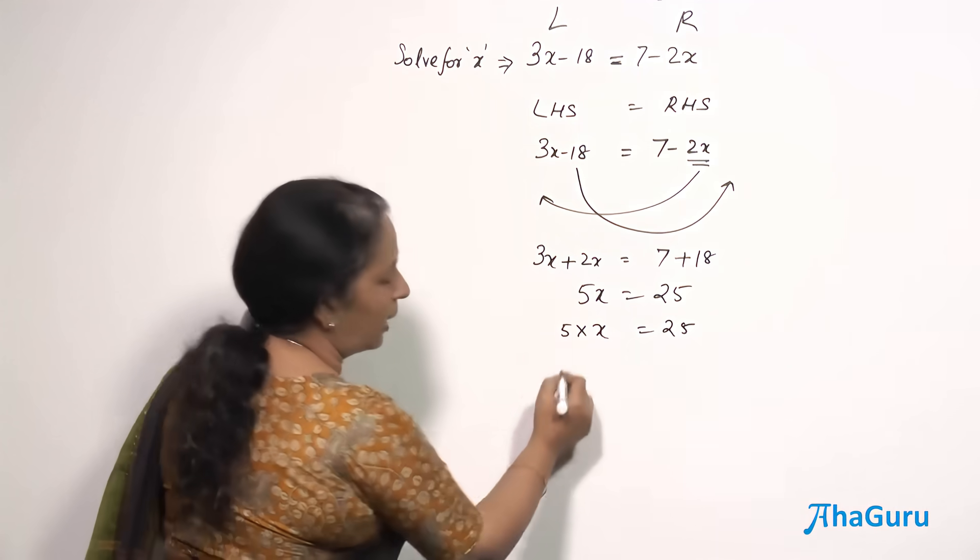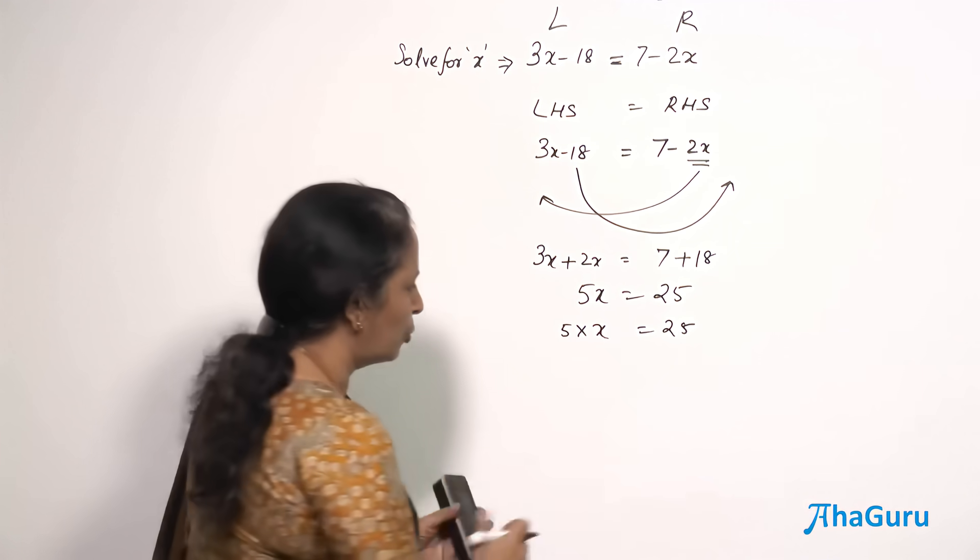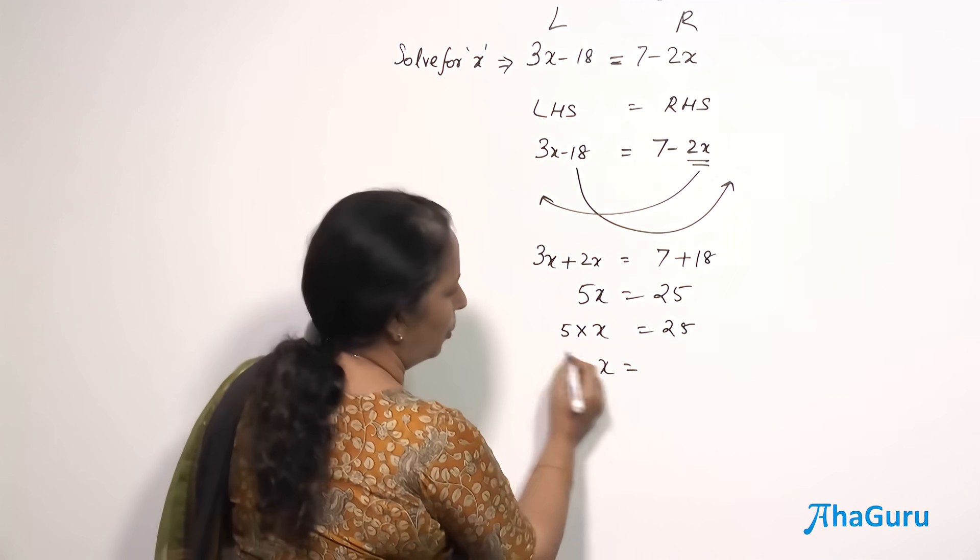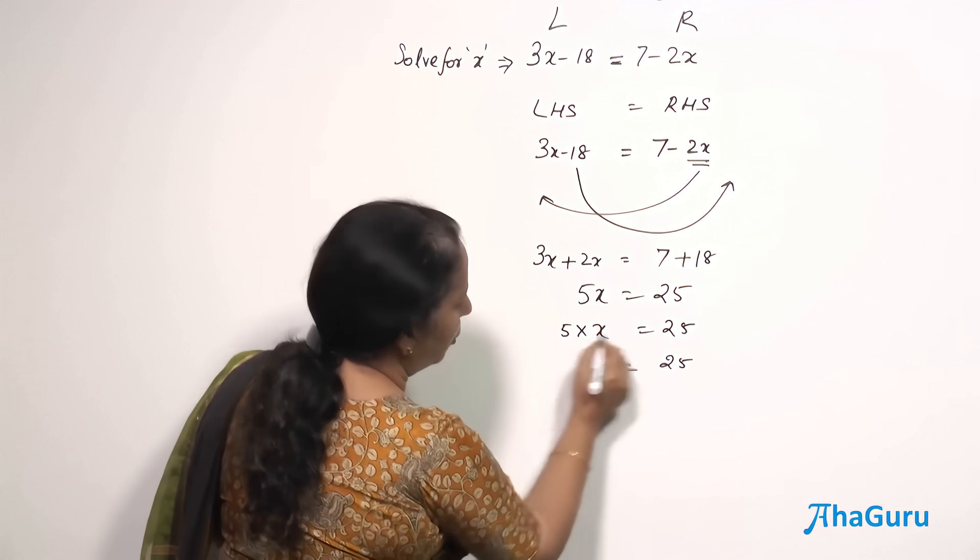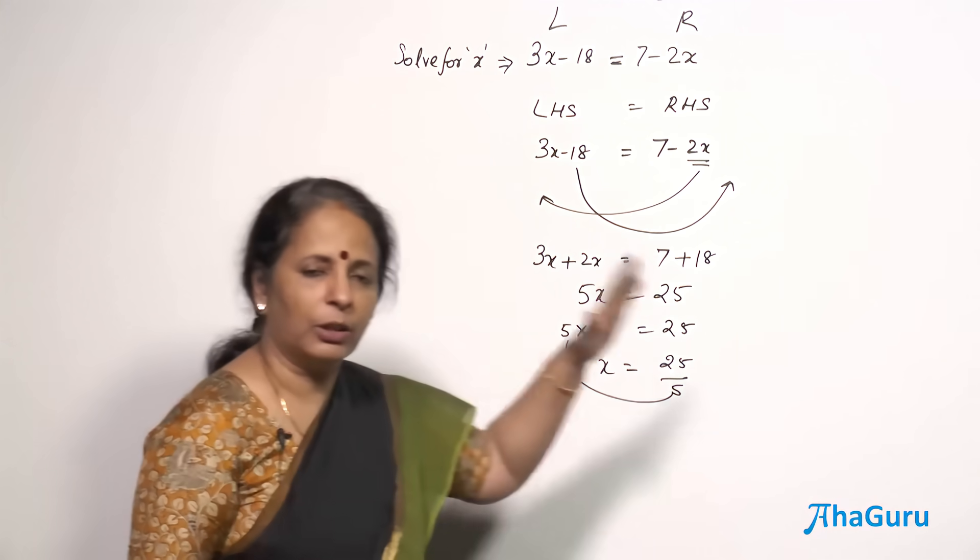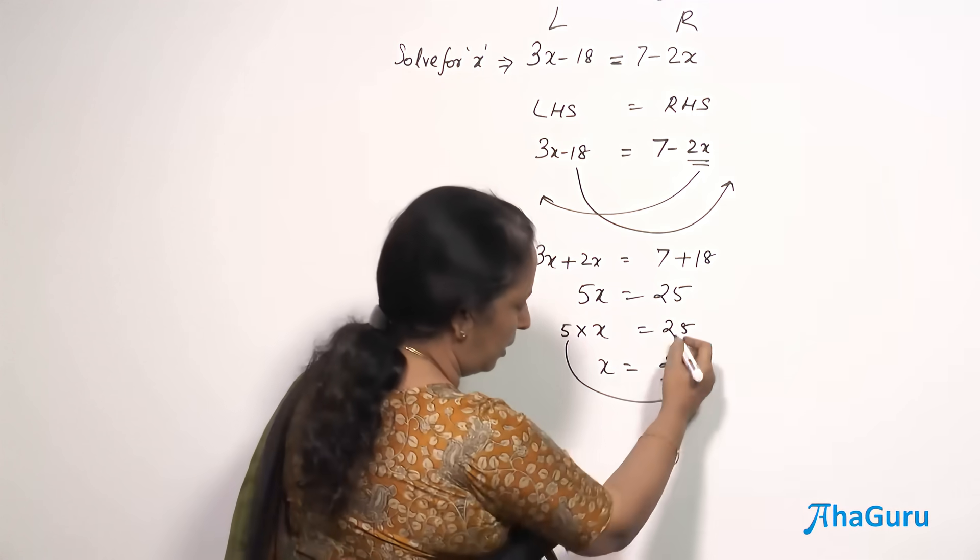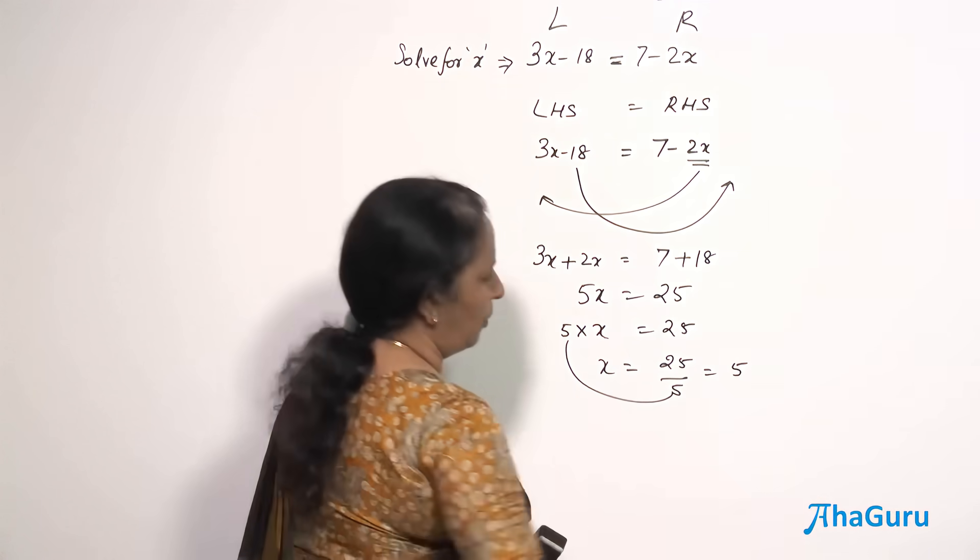So obviously now there is not addition or subtraction but there is a multiplication between 5 and x. So just to find x, you have to divide that 25 by this 5 because there is a multiplication sign here. When it goes to the other side, the operation becomes division. 25 by 5 is 5.